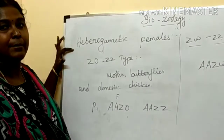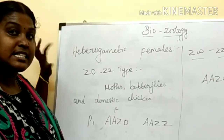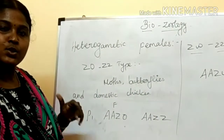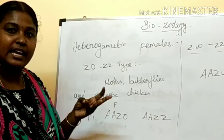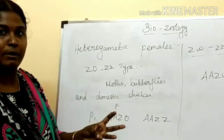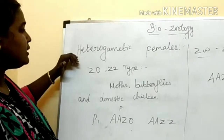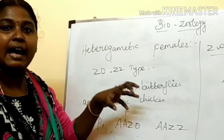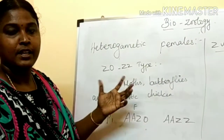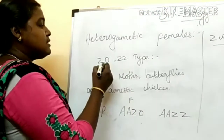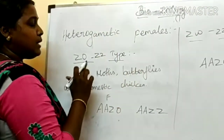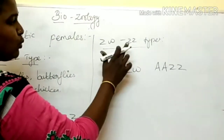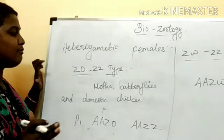We already studied the heterogametic male, because the male has only two patterns: X and Y. Now we study the two examples — one is the XO type and another is the XY type. In the case of heterogametic females, the female has heterogametes, not homogametes. There are two types of heterogametic females: one is the ZO/ZZ type and the other is the ZW/ZZ type.